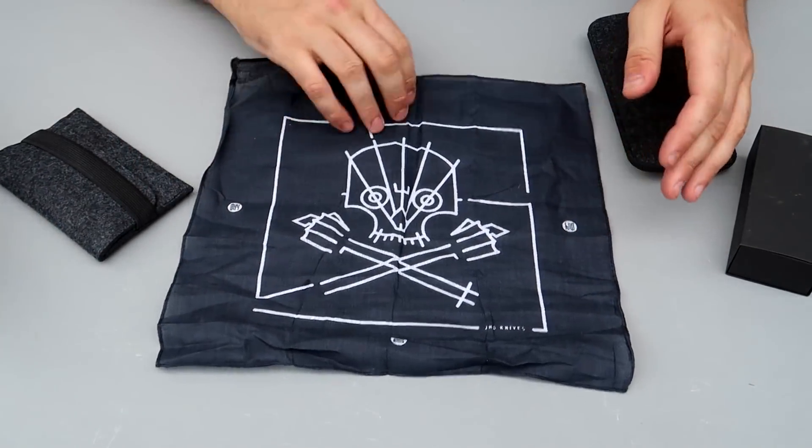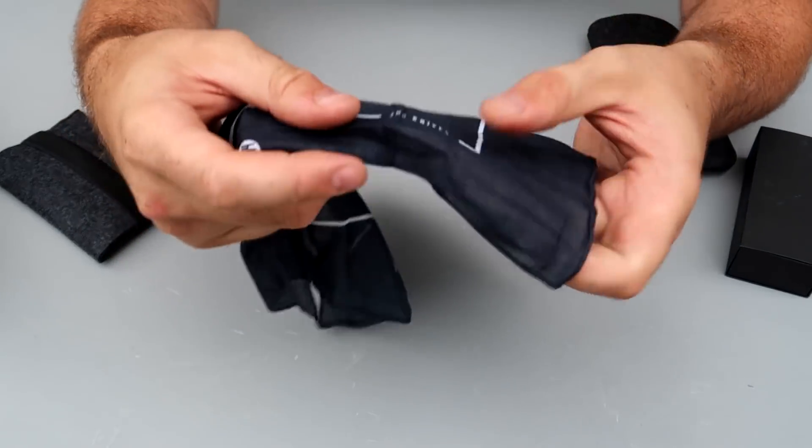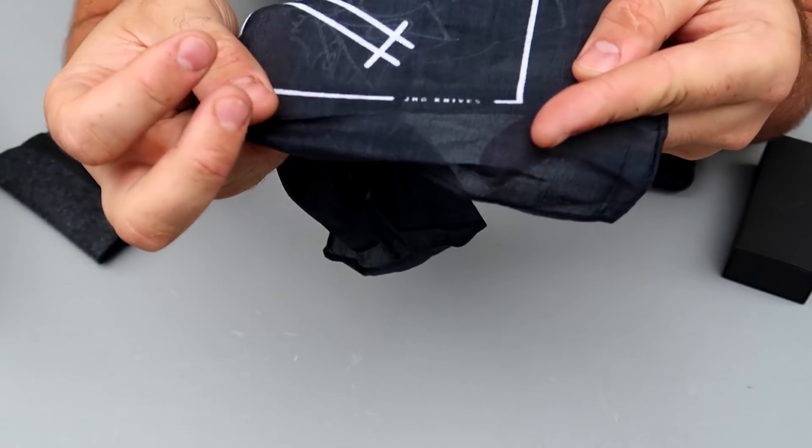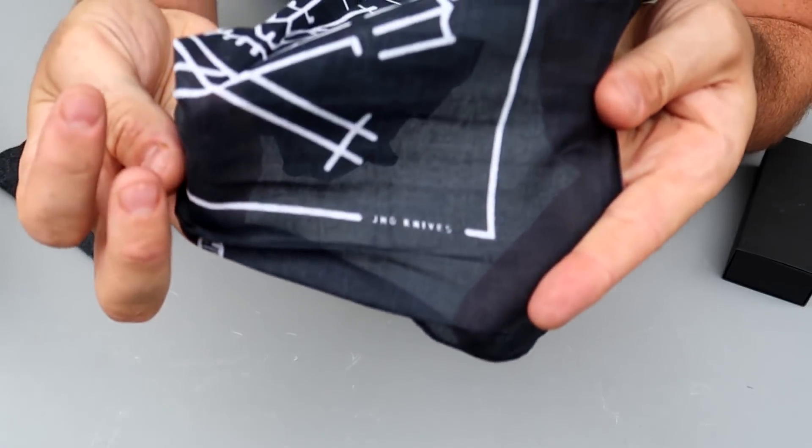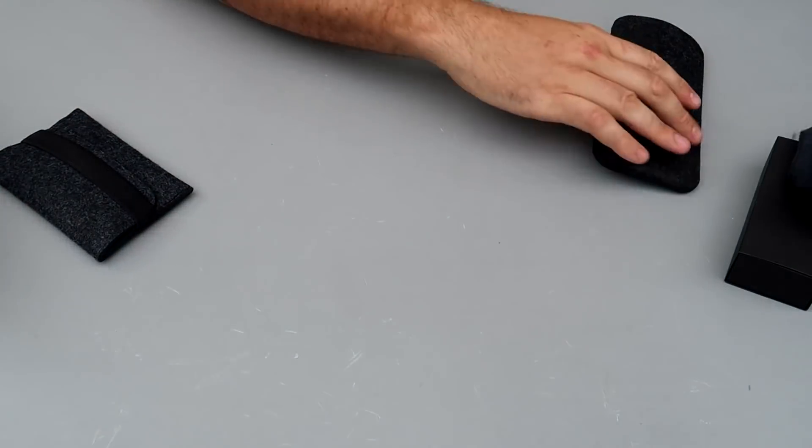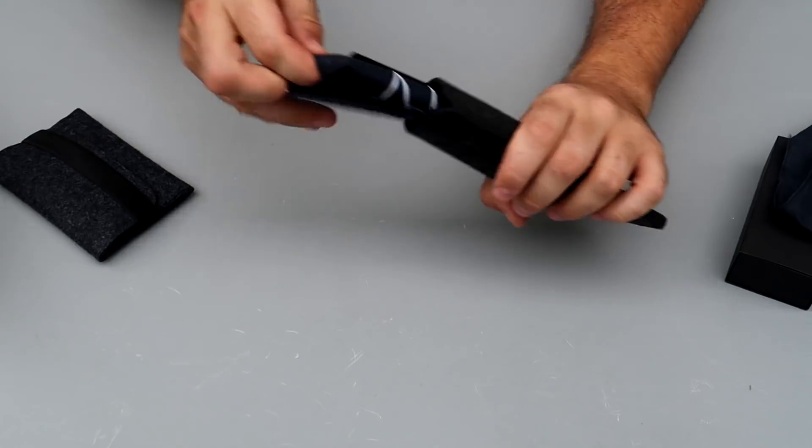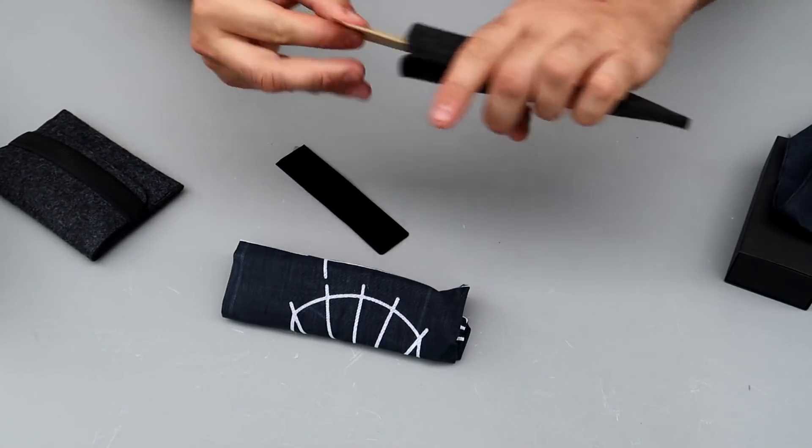This is another logo, pretty nice scarf or handkerchief. JHO knives, this is the brand of the knives. They don't have too many followers but waiting to be discovered.